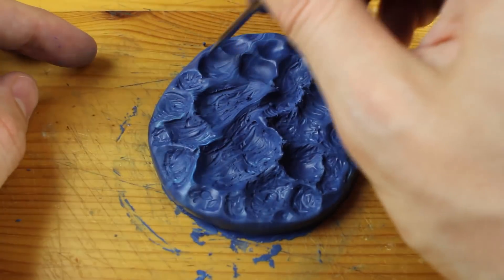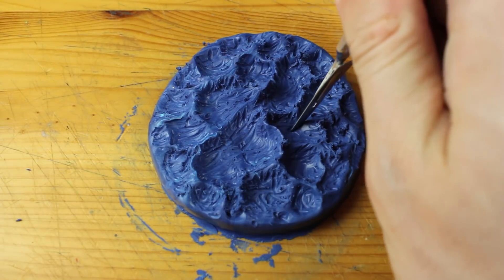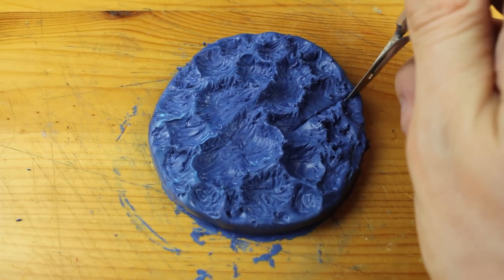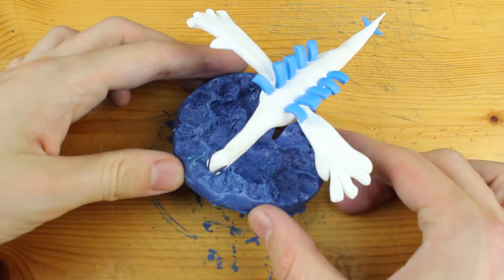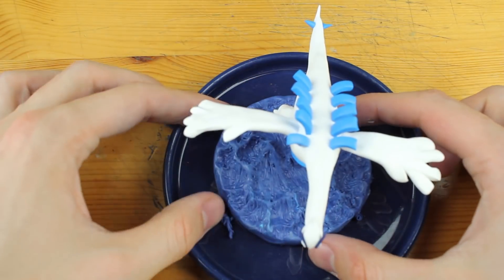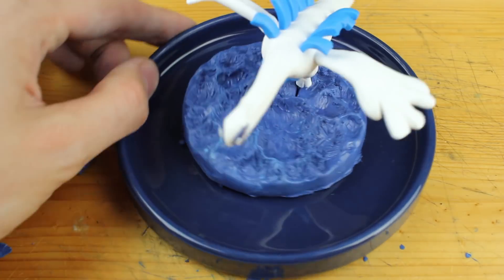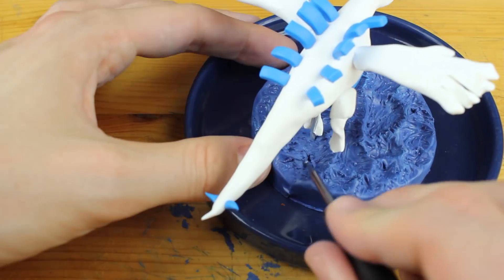And you can already feel the water flowing around. All we have to do right now is to slice it open and place Lugia right above the water, above the ocean effect. Okay, place it onto a plate.